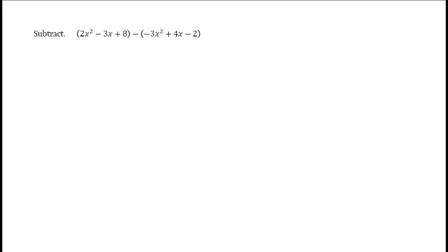To subtract these two polynomials, the first thing you have to do is remove the parentheses. In the first set of parentheses, there is no sign preceding the parentheses, which means it's a positive. That means we can simply drop the parentheses off of the first polynomial.